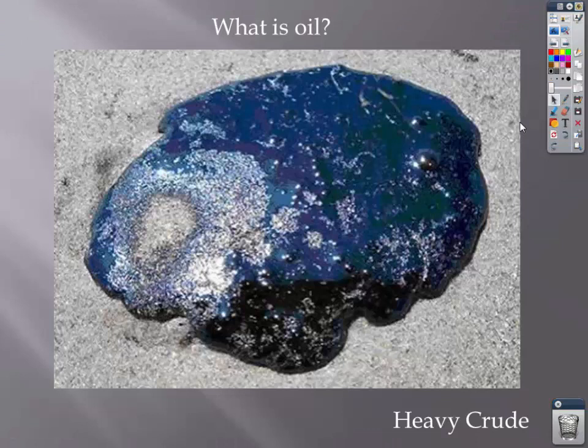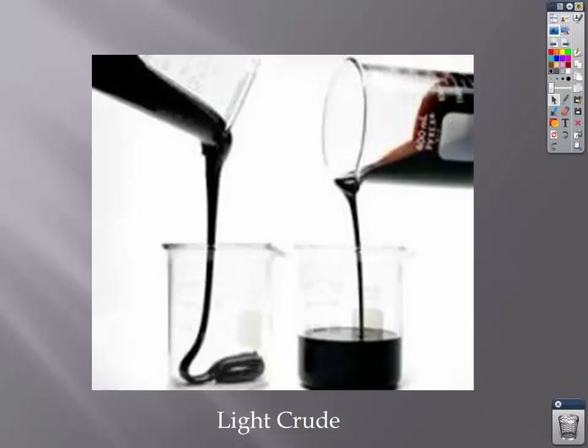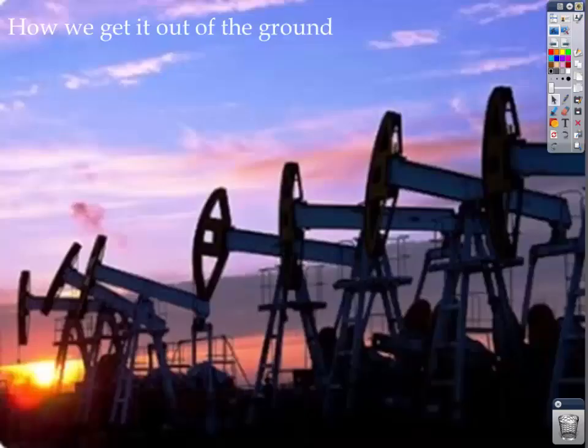When oil comes out of the ground, it's not ready to put in our engines or home heating tanks. What comes out is called crude oil, which comes in two types: heavy crude and light crude. Crude oil is made up of different materials that need to be separated — it's very thick and gooey, contains tar, and needs to be refined. Heavy crude is of lesser quality with more tar. Light crude is the better of the two, used more for gas, diesel, and other products.